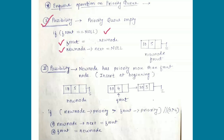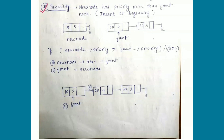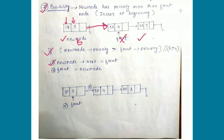The second possibility is when the new node has a higher priority than the front node. Consider an existing priority queue with two nodes having priorities 4 and 3, and we want to add a new node 10 with priority 5. Since new node priority 5 is greater than front priority 4, we add the new node before front by setting new node's next to the current front, then updating front to the new node.